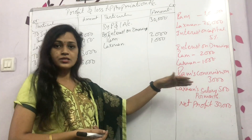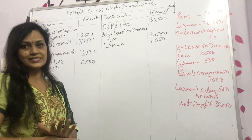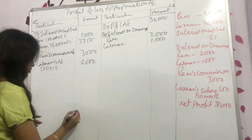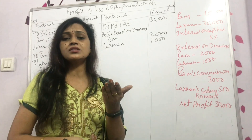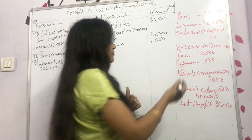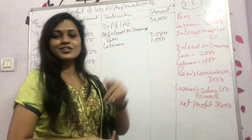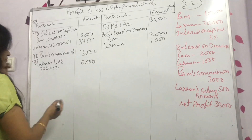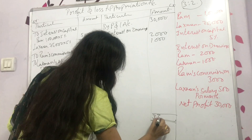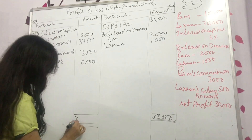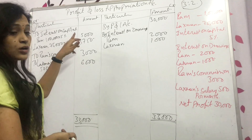Extra data may be given to confuse you — don't touch it. Now let's see the total. The profit sharing ratio is 3:2 — I didn't mention it earlier. If nothing is mentioned, we share equally, but here it is 3:2. Let me check the total: credit side is 33,000. Check which side is more; sometimes debit side being more means a loss.